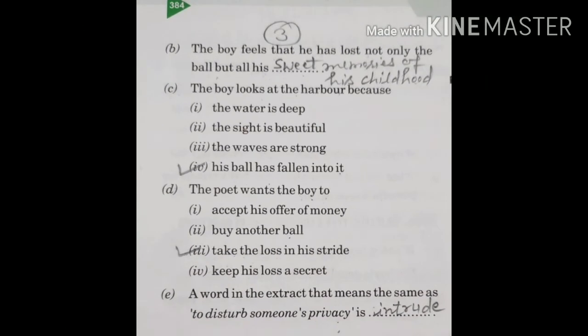Next passage, given according to the lines: 'All his young days into the harbor where his ball went, I would not intrude on him.' The boy feels that he has lost not only the ball but all his sweet memories of his childhood — we can also say 'young days.' The boy looks at the harbor because his ball has fallen into it. The poet wants the boy to take the loss in his stride — to learn to bear this loss.